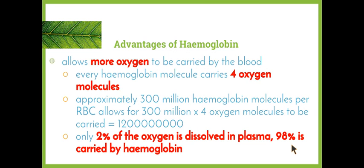The first advantage of hemoglobin is that it allows more oxygen to be carried in the blood. Every hemoglobin molecule carries four oxygen molecules. Oxygen doesn't dissolve very well in water, so only small amounts of oxygen could diffuse into the blood plasma, which is 90% water. The hemoglobin offers a second way to carry the oxygen. Our red blood cells have millions of hemoglobin molecules and can therefore carry four times millions of oxygen molecules — approximately 300 million hemoglobin molecules per red blood cell means each red blood cell can carry 4 × 300 million oxygen molecules.